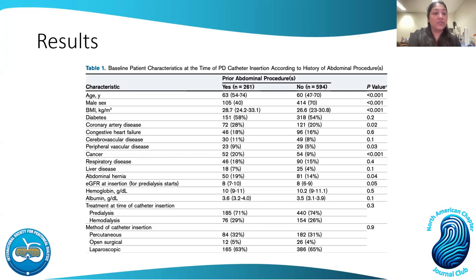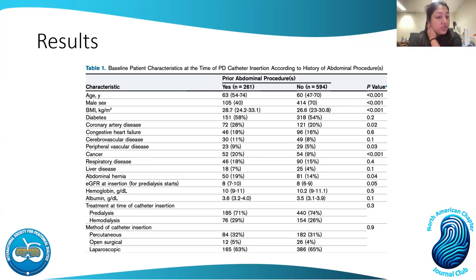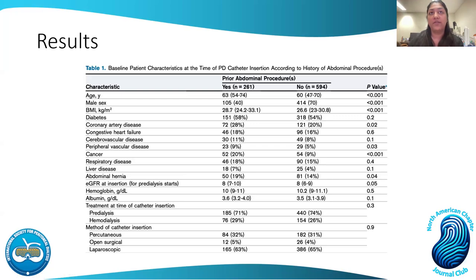Table one shows baseline characteristics for both groups — prior abdominal procedures versus no prior abdominal procedures. The group with a history of abdominal procedures was slightly older, more likely to be female, and had a higher BMI, all with p-values less than 0.001. They also had a higher proportion of patients with current or previous malignancy, peripheral vascular disease, abdominal hernias, and CAD — with abdominal hernias being most relevant to this discussion. The rest of the table covered specific breakdowns of laparoscopic techniques and catheter characteristics, which were varied between the two groups.